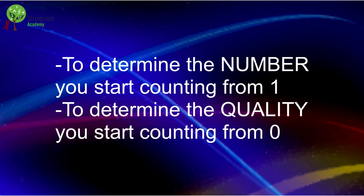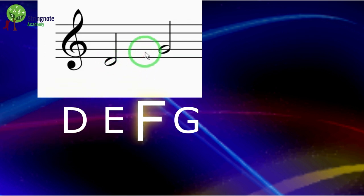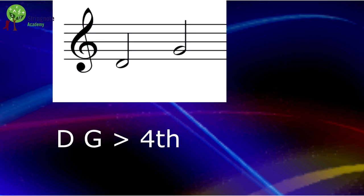We are now determining the number, so I start counting from one: one, two, three, four. This is a fourth. We don't care at the moment if it is a perfect or augmented fourth. We are now working on the second part of the name of the interval — the number.